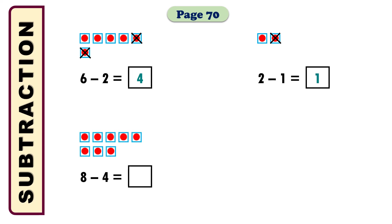In the next math we have 8 minus 4 equals 4. Let's take 8 boxes. Among the 8 boxes I need to cross 4: 1, 2, 3, 4 — 4 boxes are crossed. So how many remain? Let's count: 1, 2, 3, 4 — 4 boxes remain uncrossed. So the answer will be 4. We have 8 boxes, crossed 4 among them, and the remaining 4 boxes give us the answer of 4.